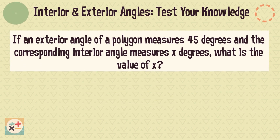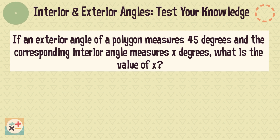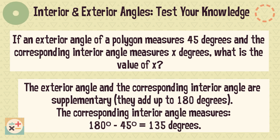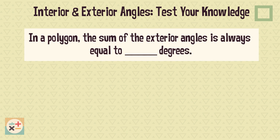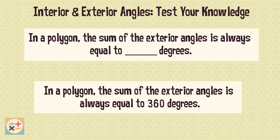Question 7. If an exterior angle of a polygon measures 45 degrees, and the corresponding interior angle measures x degrees, what is the value of x? The exterior angle and the corresponding interior angle are supplementary — they add up to 180 degrees. The corresponding interior angle measures 135 degrees. Question 8. In a polygon, the sum of the exterior angles is always equal to how many degrees? The sum of the exterior angles is always equal to 360 degrees.